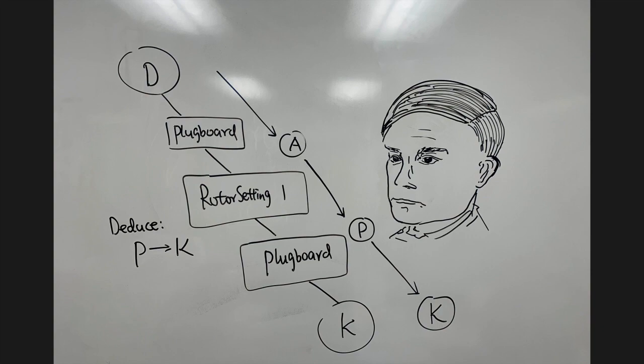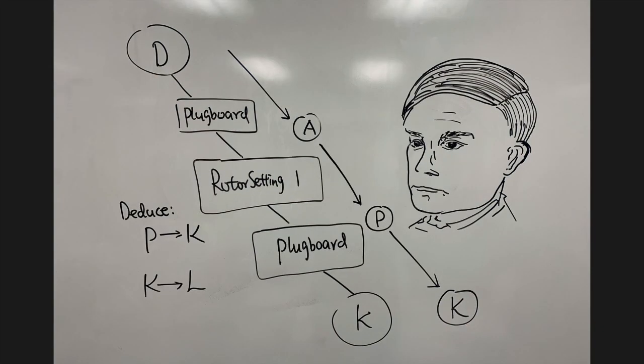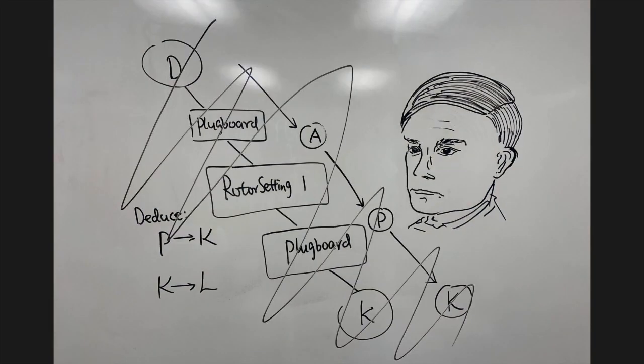Of course, we might run into contradictions while trying out a setting. Maybe we found out that K is also mapped to L. In which case, we are going to have to eliminate the settings we tried out, and then test out another one.